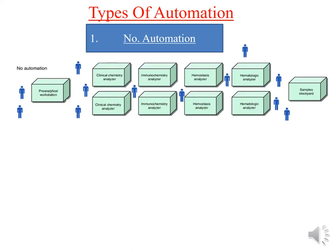Now we come to the types of automation. The first type is where there is no automation. No automation doesn't mean there are no auto-analyzers — there is a difference between automation and auto-analyzer, which we shall see in the proceeding slides.